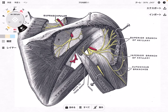In this video, I am going to explain the anatomy of the posterior part of the scapula and shoulder joint. In the first part, I'm going to explain the anatomy of muscles, then nerves, then I am going to explain important structures on the posterior part.